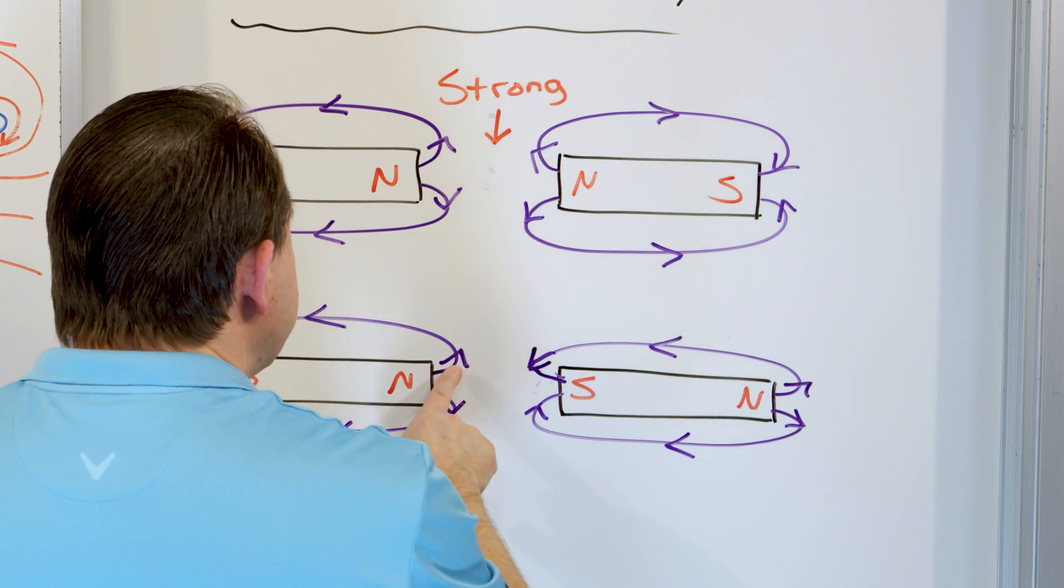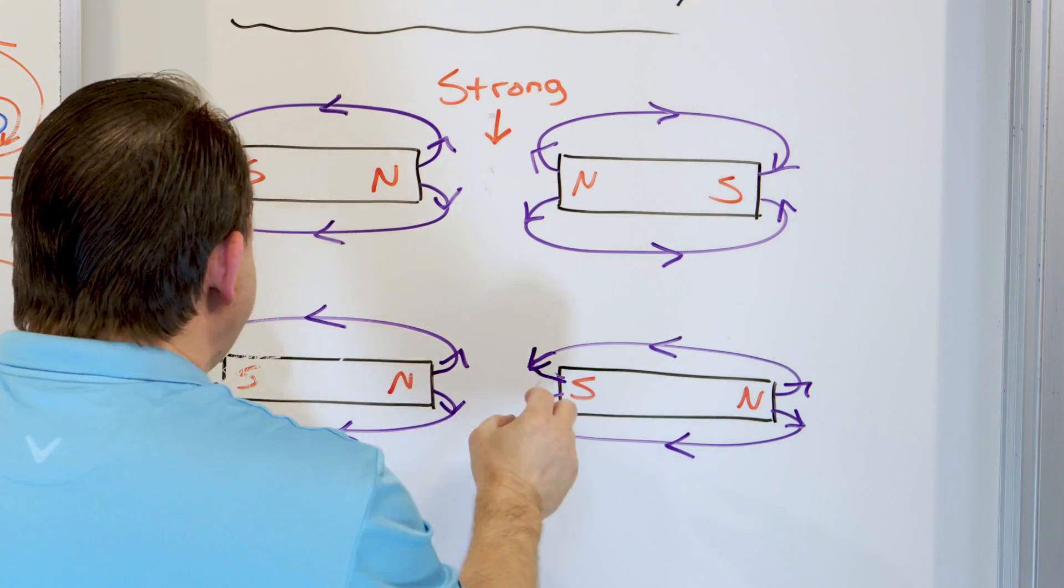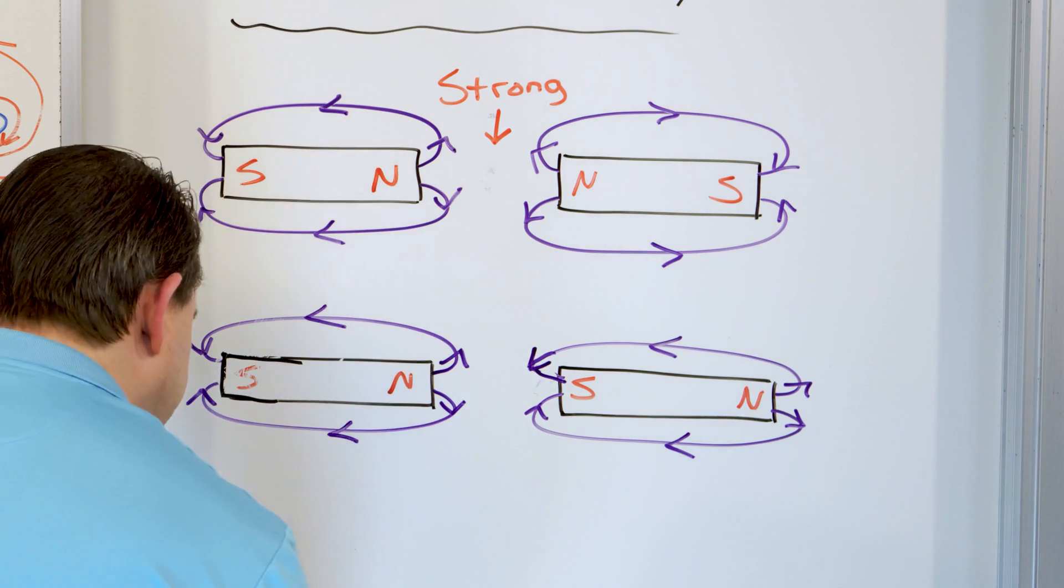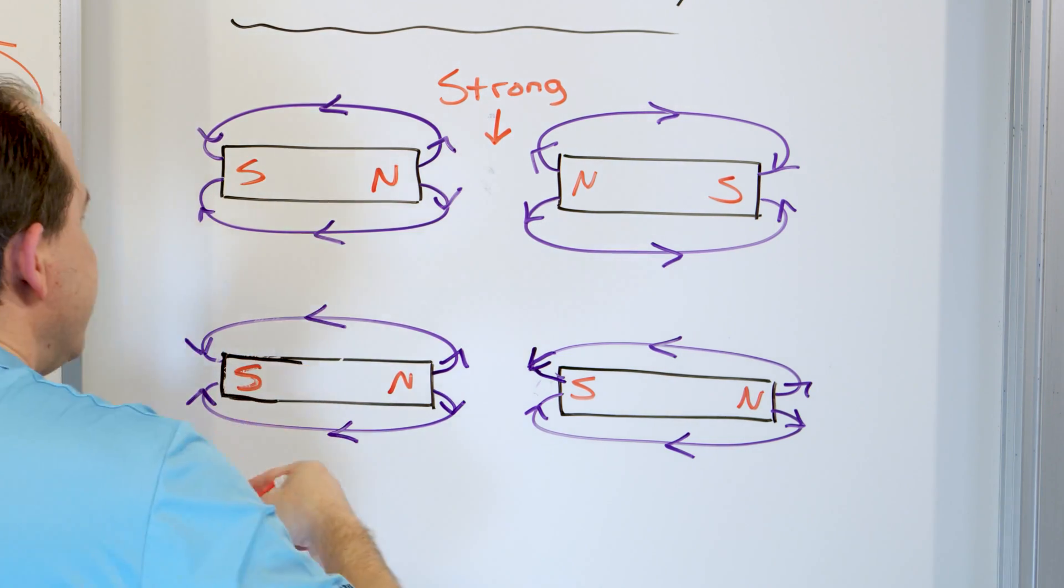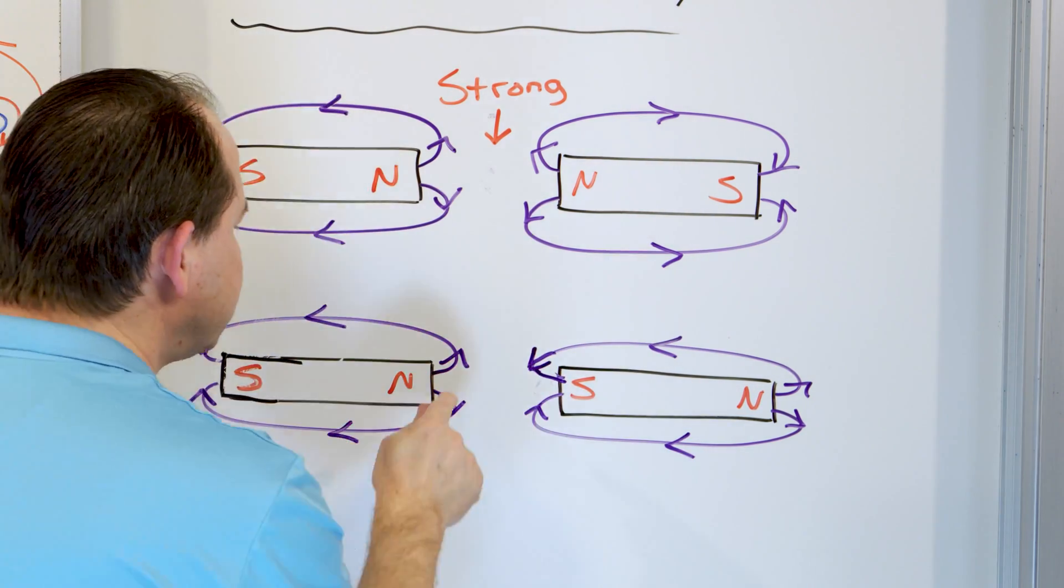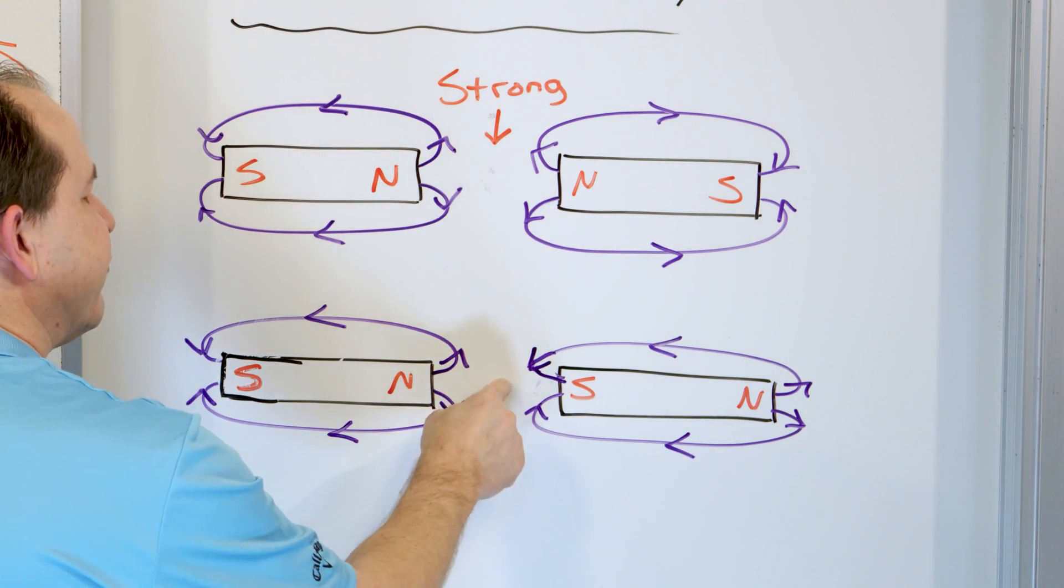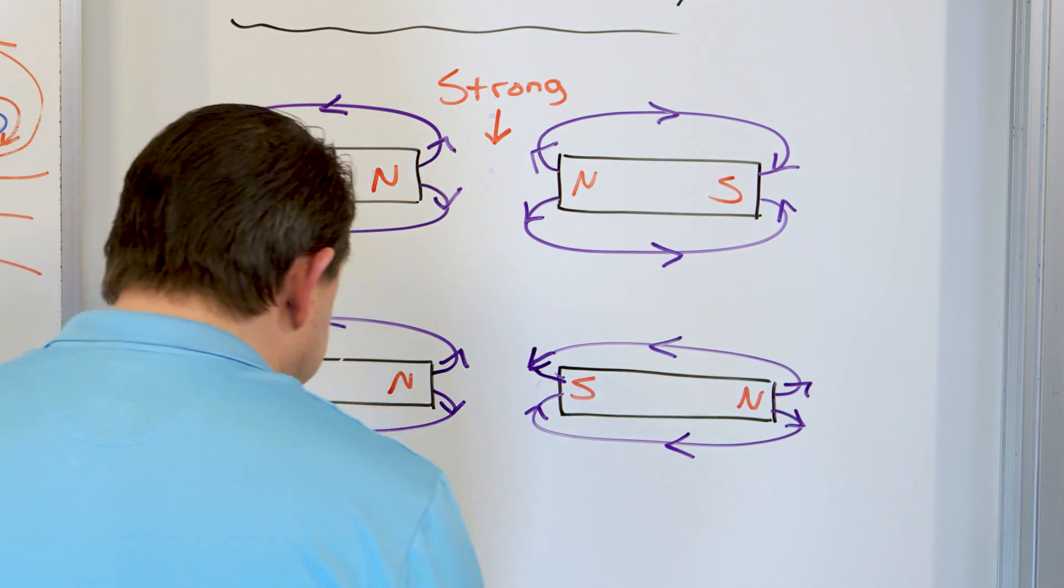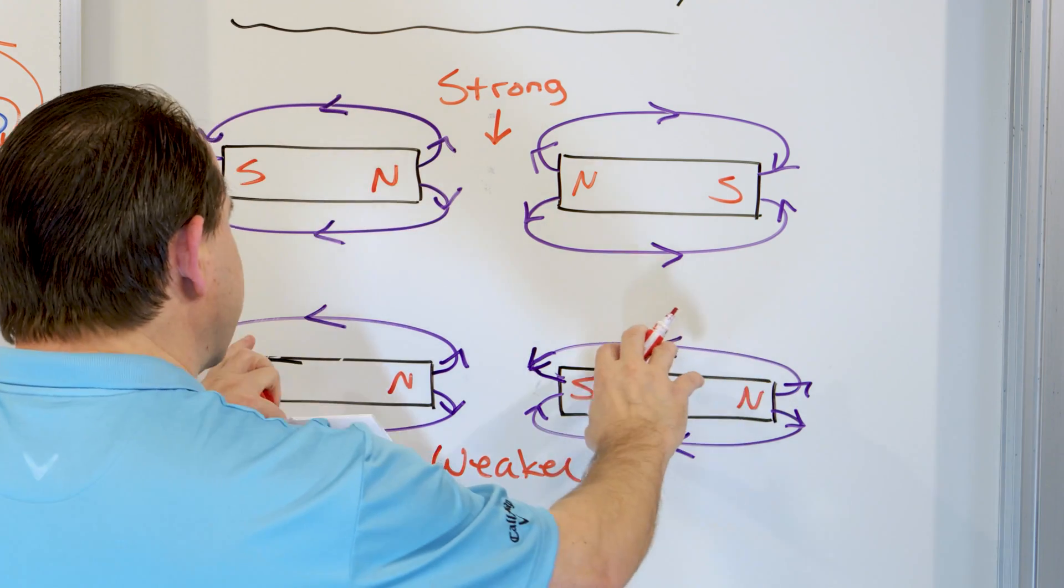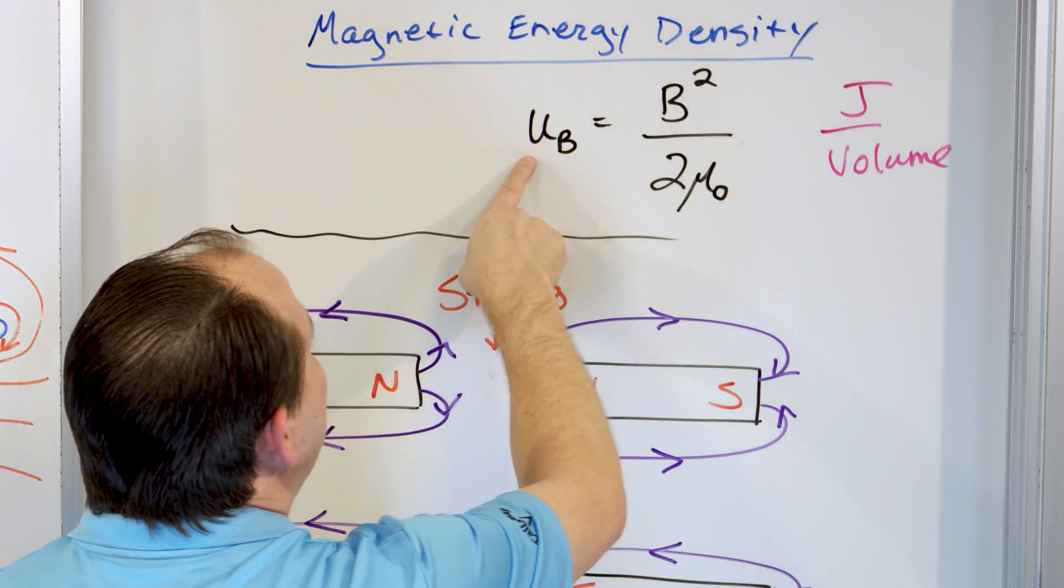When I bring these things closer together, notice that this one is going up, but this one at the same location is going down. They're fighting each other. And as I bring them closer and closer together, as I bring them closer and closer together, what is going to happen? This magnetic field is going to tend to cancel with that one and make the magnetic field strength lower. This one is going to be going opposite direction of this one, and it's going to tend to make the magnetic field strength lower in the center here. So as I bring these guys together, I'm going to write down weaker. As I bring them closer together, the field gets weaker in strength.